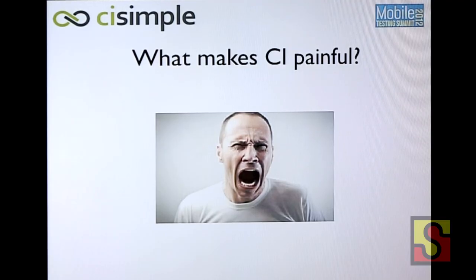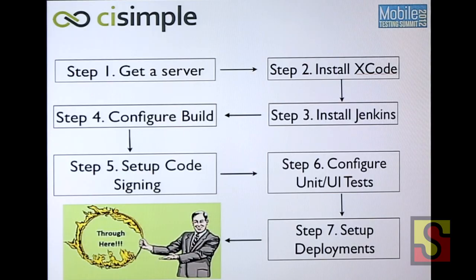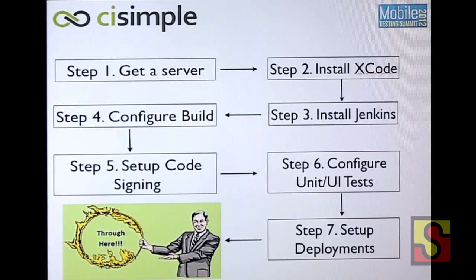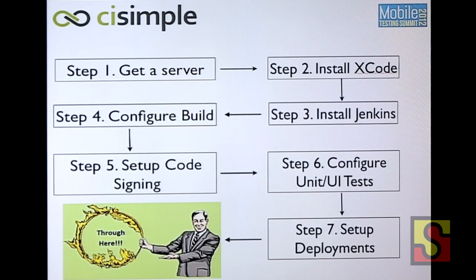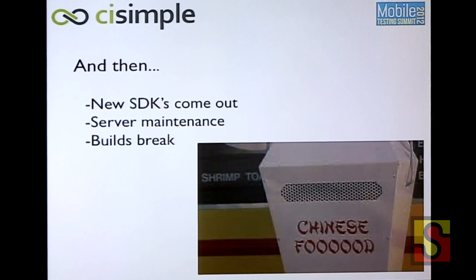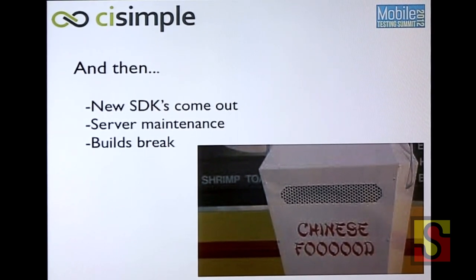So why is continuous integration so painful? If you're doing an iOS build server, you have to get a server, Xcode. God forbid you actually want to sign your app so that you can put it on devices. Set up all of your tests. This is all just very painful to do. And then as time goes on, you're always upgrading. Servers break, builds break, and bad things happen. This unfortunately costs time.